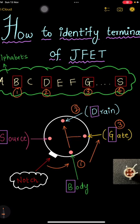And then I will again move to the opposite side of the gate. I will get the fourth terminal, that is known as source. I hope you understood how to identify the terminals of JFET.